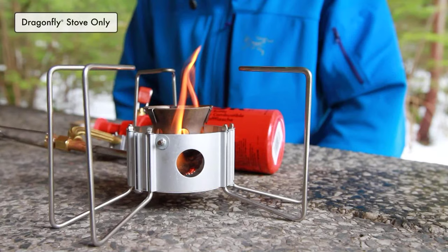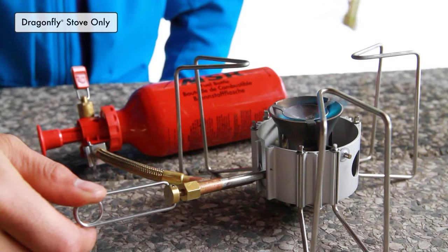If you have a Dragonfly stove, use the flame adjuster control valve to regulate the flow of fuel until you are ready to turn off your stove.